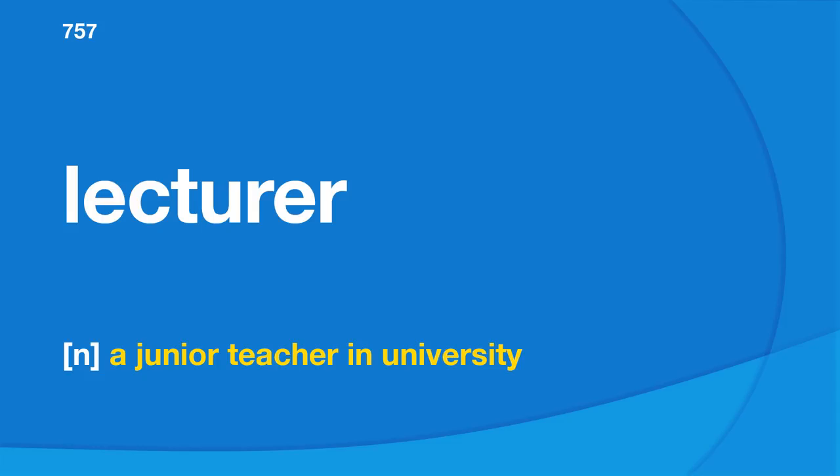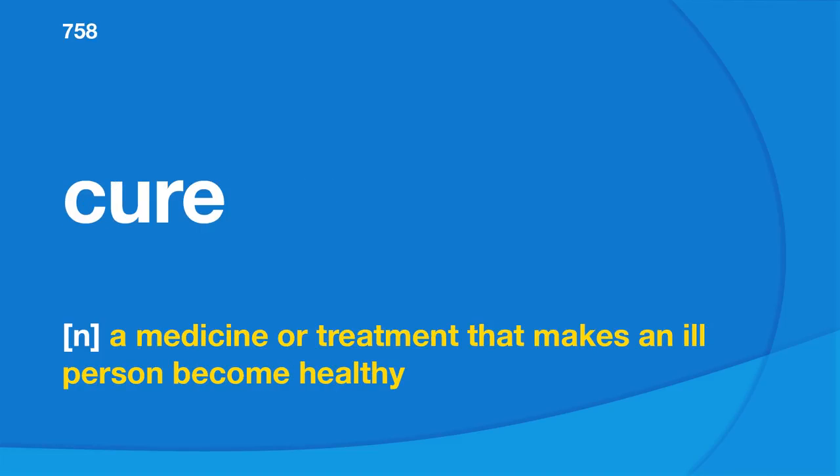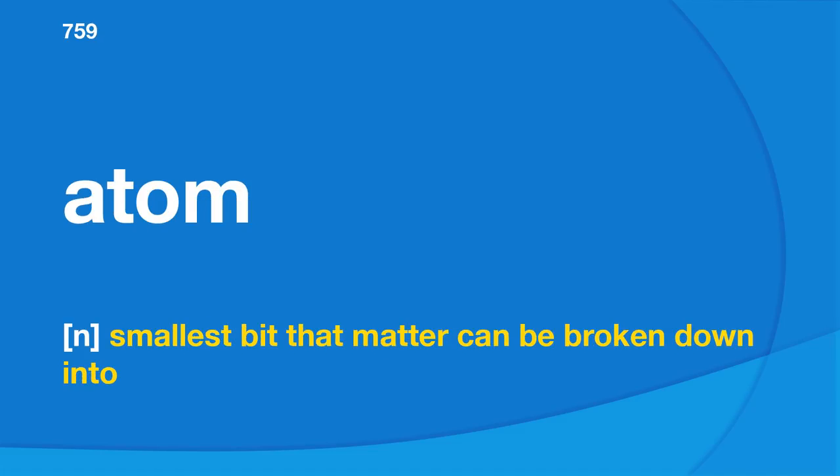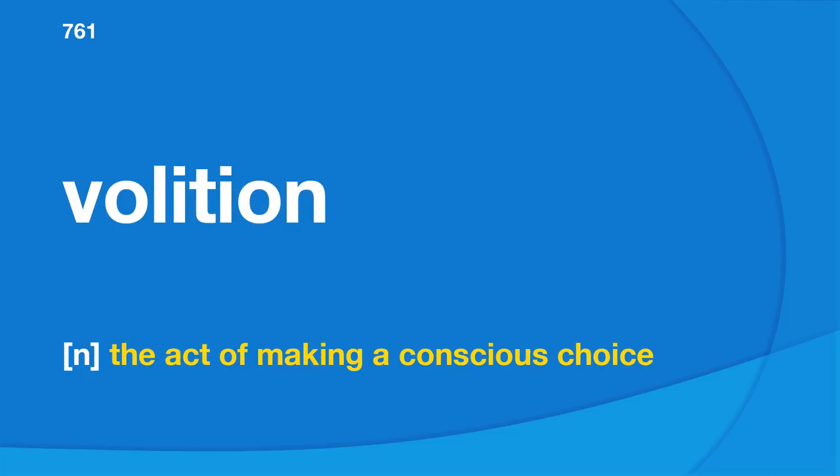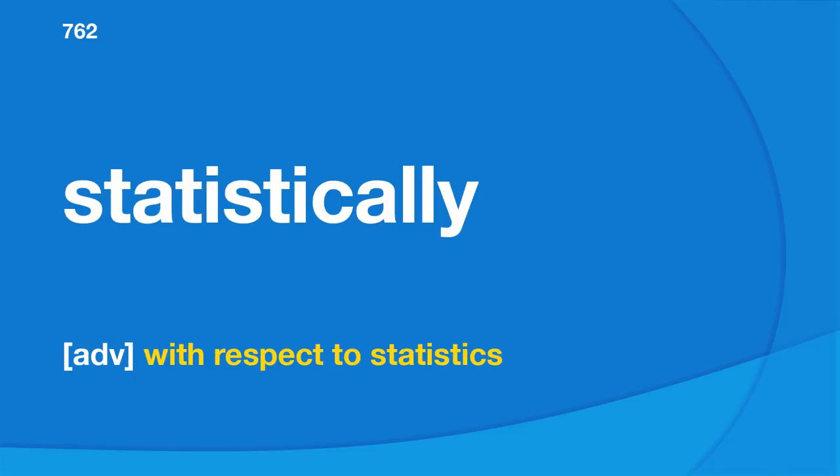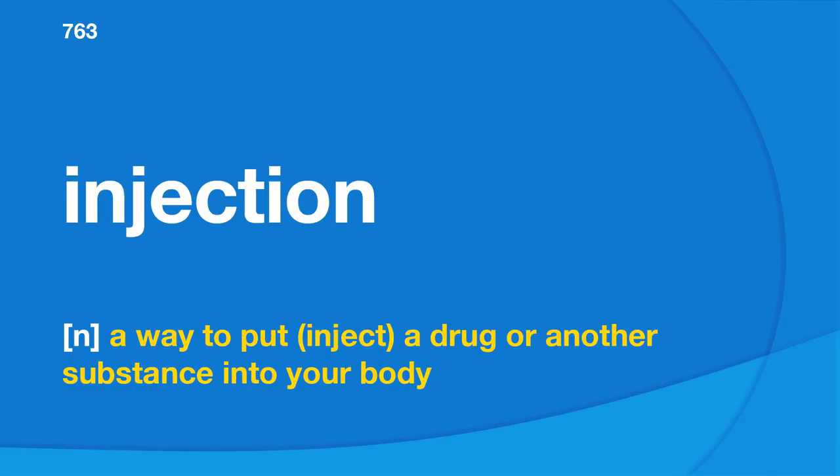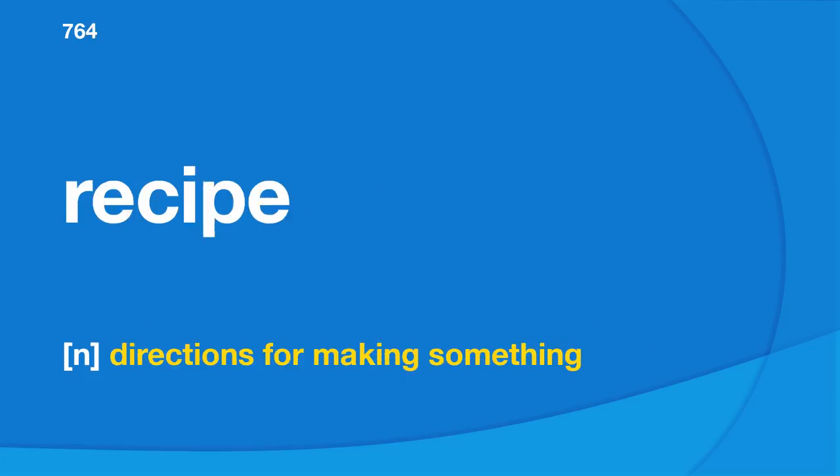Container: an object that can be used to hold things. Volition: the act of making a conscious choice. Statistically: with respect to statistics. Injection: a way to put a drug or another substance into your body. Recipe: directions for making something. Bound: to go to a specified place, to jump. Parenthesis: one of two symbols used in writing. Subtle: difficult to notice, understand, or see.